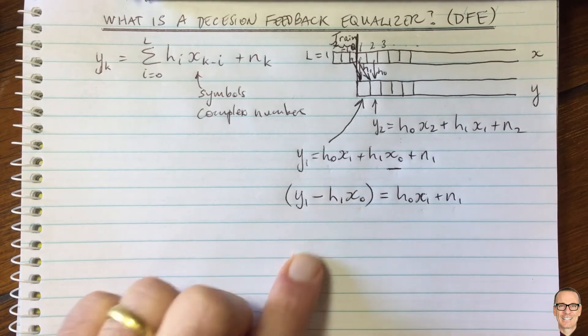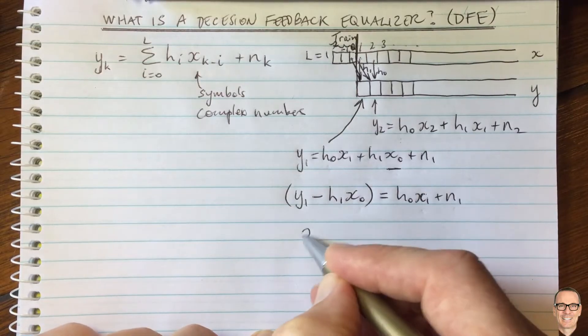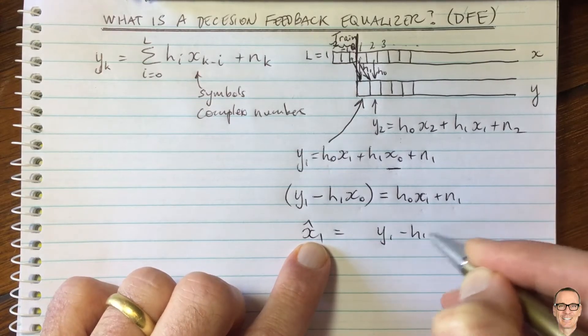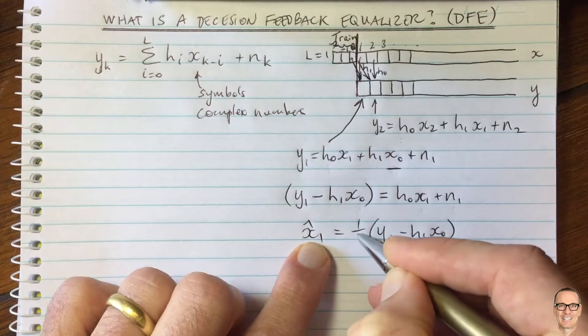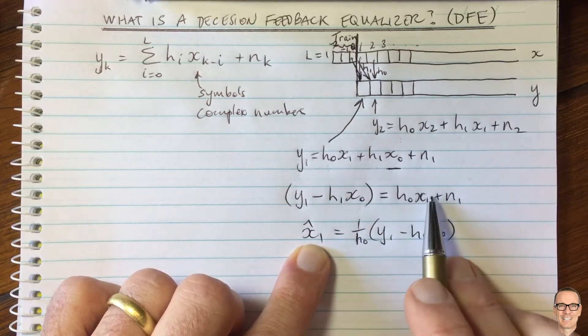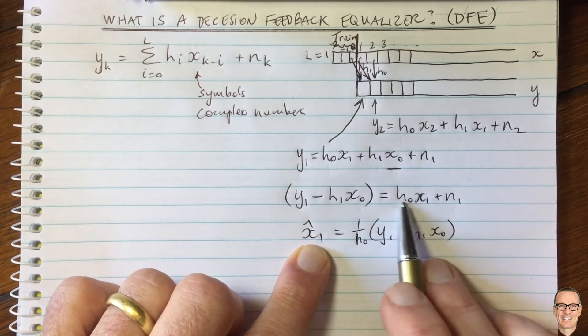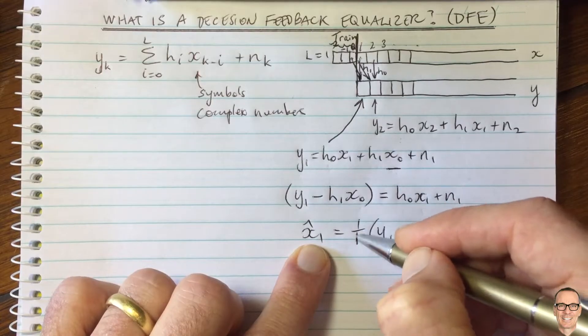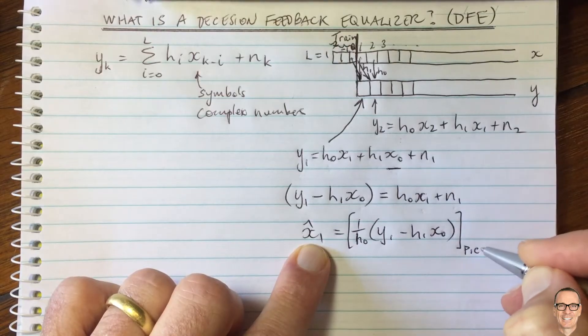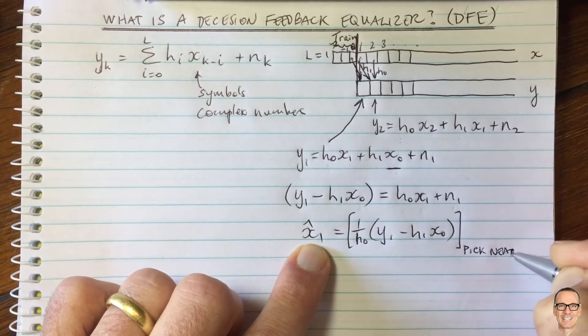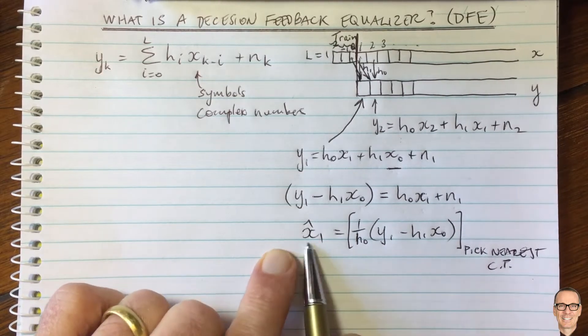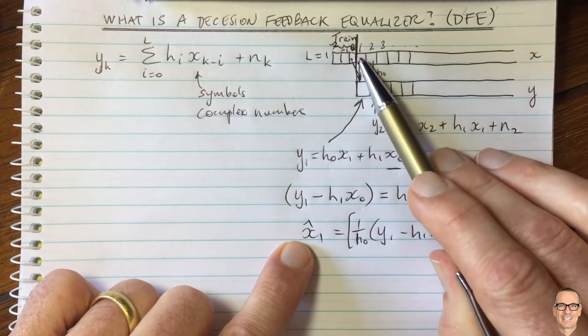So one thing that we could do to estimate x1 is we could say that an estimate for x1 equals the y1 minus h1 x naught. Something we could do is divide both sides of this by h naught, and then we would have just x1 here plus the noise normalized from the channel. And so we could take that value here, and we could then pick the nearest constellation point. So pick nearest constellation point. Okay, and so this would be a way of getting an estimate for the first data symbol that was sent.